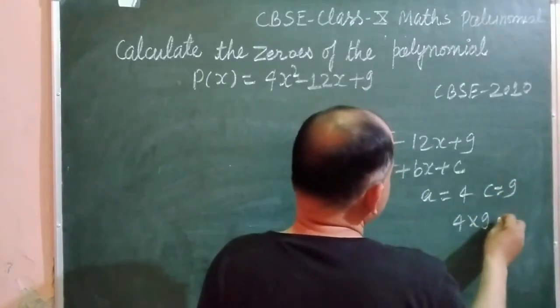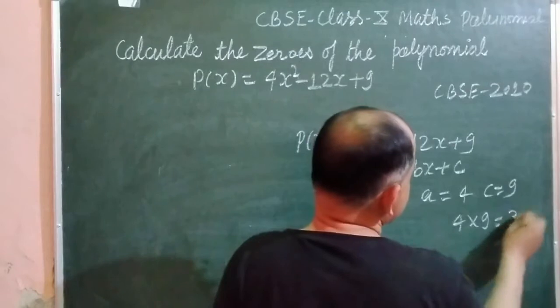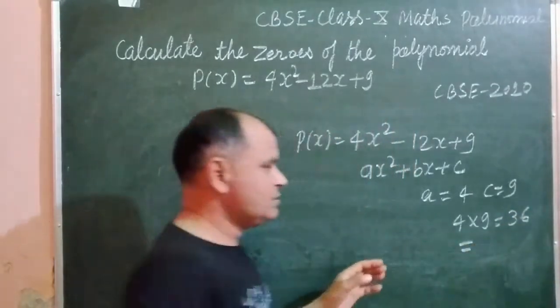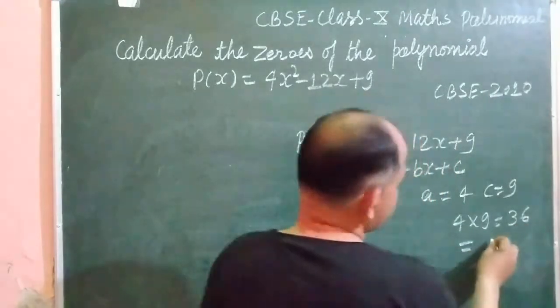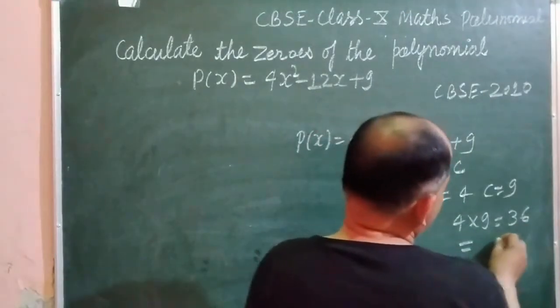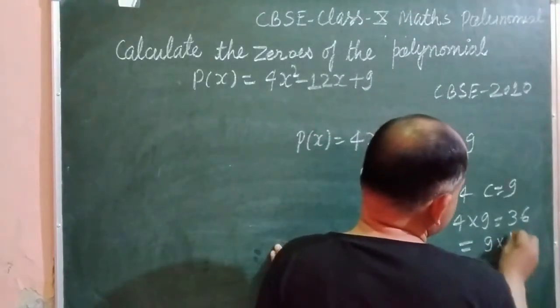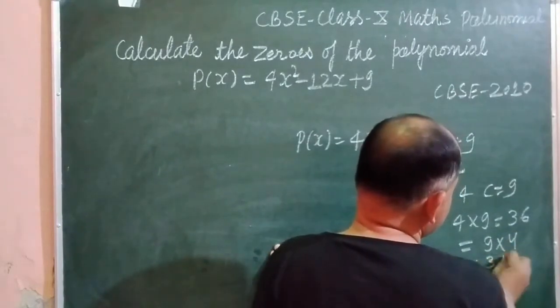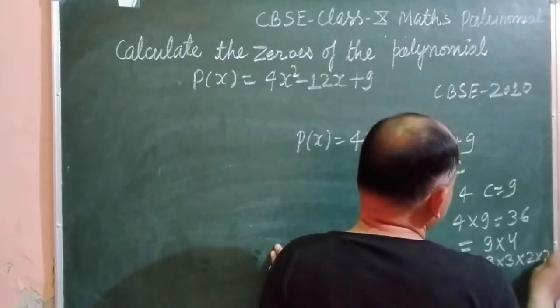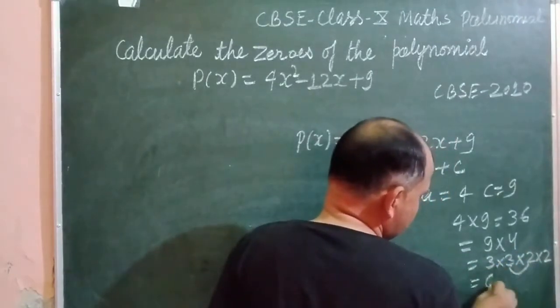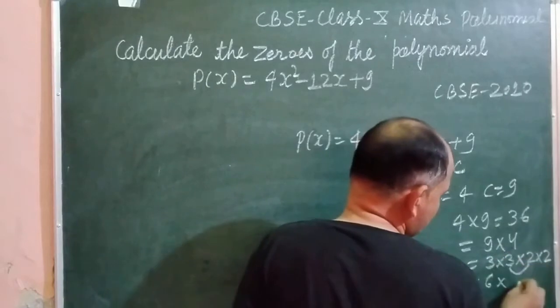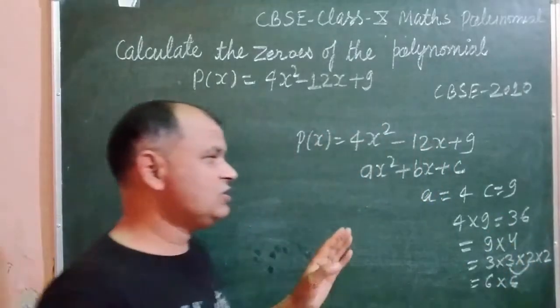So 4 into 9, we got 36. 36 can be obtained by multiplications. 9 can be written as 3 into 3, and 4 as 2 into 2. So 3 into 2 becomes 6 and 3 into 2 becomes 6. So 6 into 6.